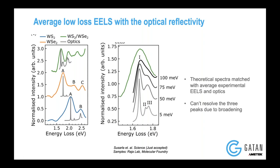If I zoom in to the WS2/WSe2 heterostructure, the optical reflectivity measurements were done at 4 Kelvin with 5 meV resolution, so you can see all three peaks. As you increase the full-width half-max, it also becomes very similar to what you see in the EELS spectra. So you can sort of correlate the optical reflectivity spectra with your low-loss EELS.